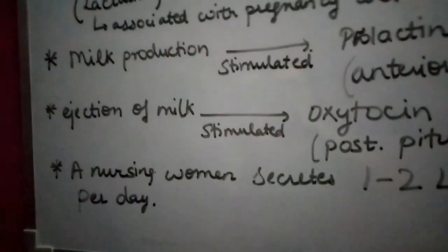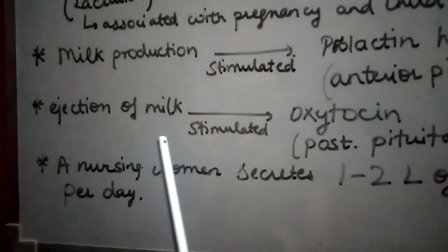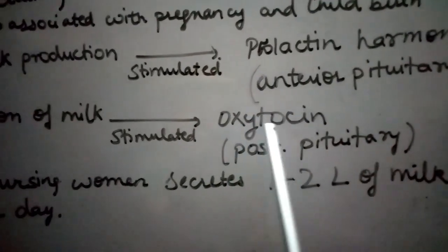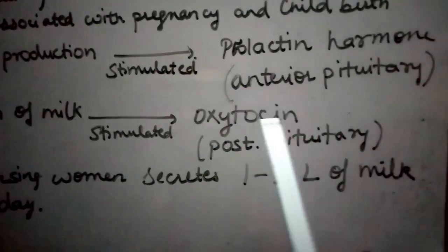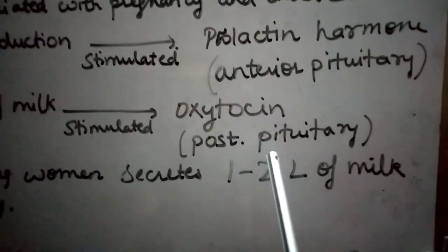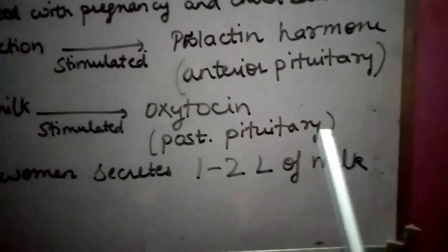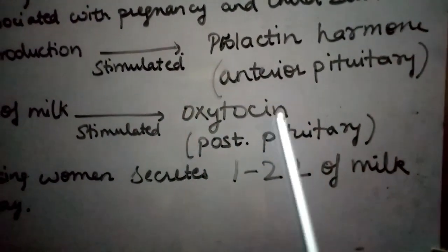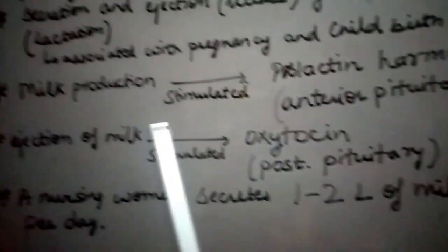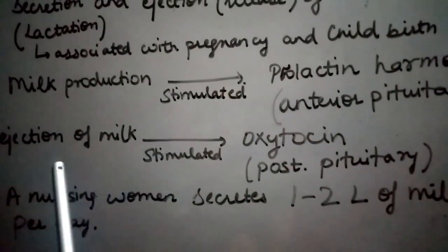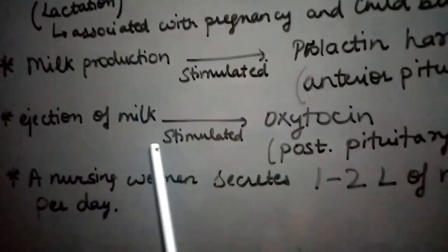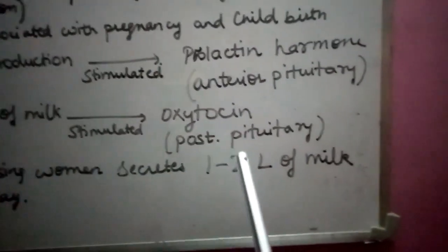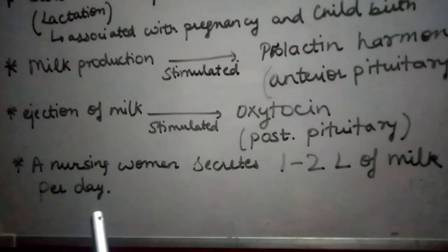The ejection of milk is stimulated by the hormone oxytocin, which is released by the posterior pituitary. On average, a nursing woman secretes 1 to 2 litres of milk per day.